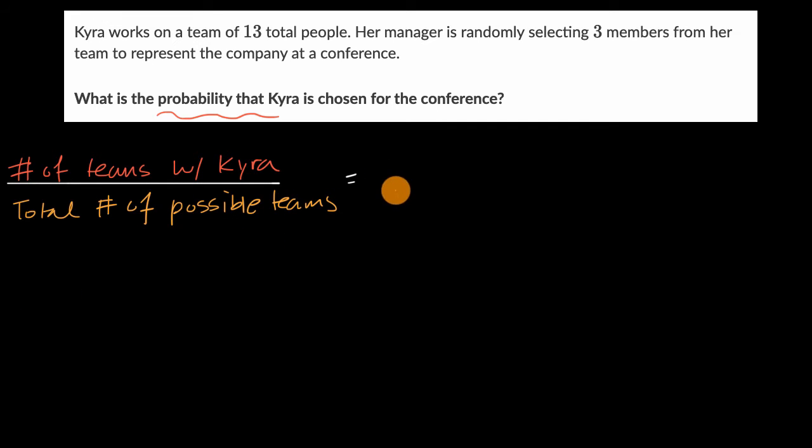So first, let me do the denominator here. What are the total possible number of teams? We know that we're choosing from 13 people and we're picking three of them. And we don't care about order. It's not like someone's going to be president, vice president, and treasurer. We just say there are three people in the team. So this is a situation where out of 13, we are choosing three people.